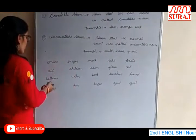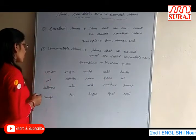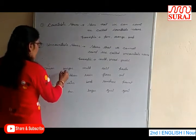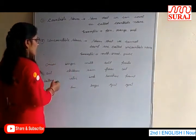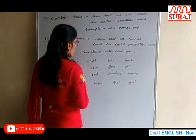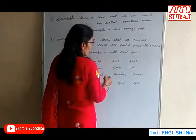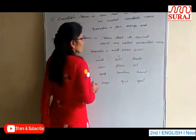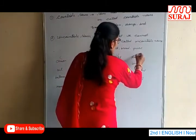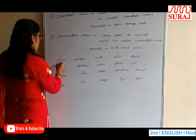First of all, onion — onion is countable. Burger — burger is countable. Milk — milk is uncountable. Salt — uncountable. Pasta — pasta is uncountable. Oil — oil is a liquid, so it is uncountable.